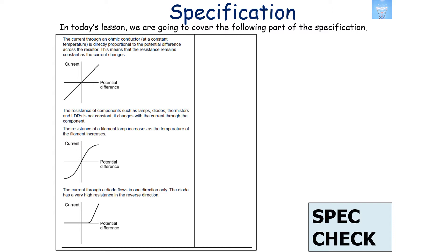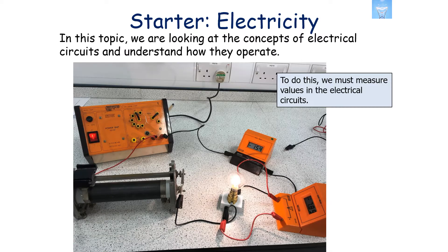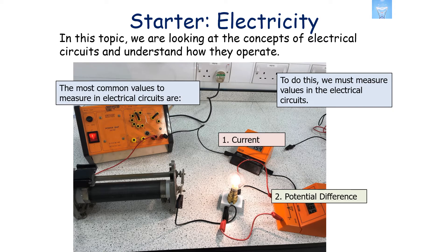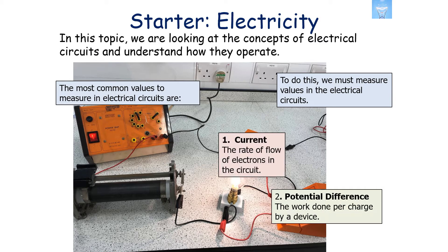We're looking at the following part of the GCSE Combined Science Physics specification. In this topic we're looking at the concepts of electrical circuits and how they operate. To do this we measure certain values — the most common being current and potential difference. Current is the rate of flow of charge, in this case electrons in the circuit, and potential difference is the work done per charge by a device to move these particles.